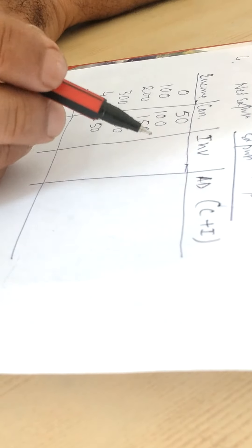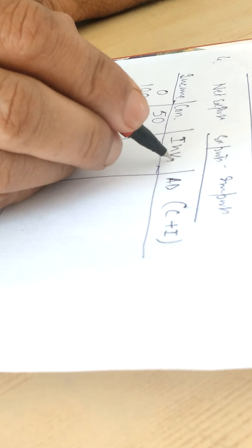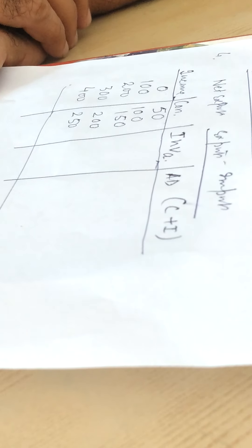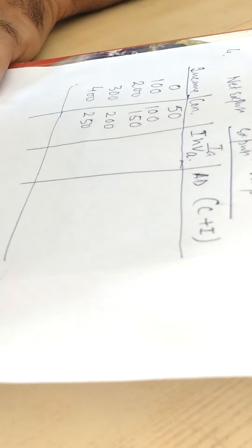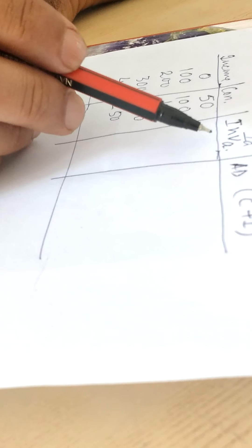Now third column is for investment. Here I take the autonomous investment or you can write IA. IA refers to autonomous investment. There are two types of investment: one is called induced investment, another is called autonomous investment.